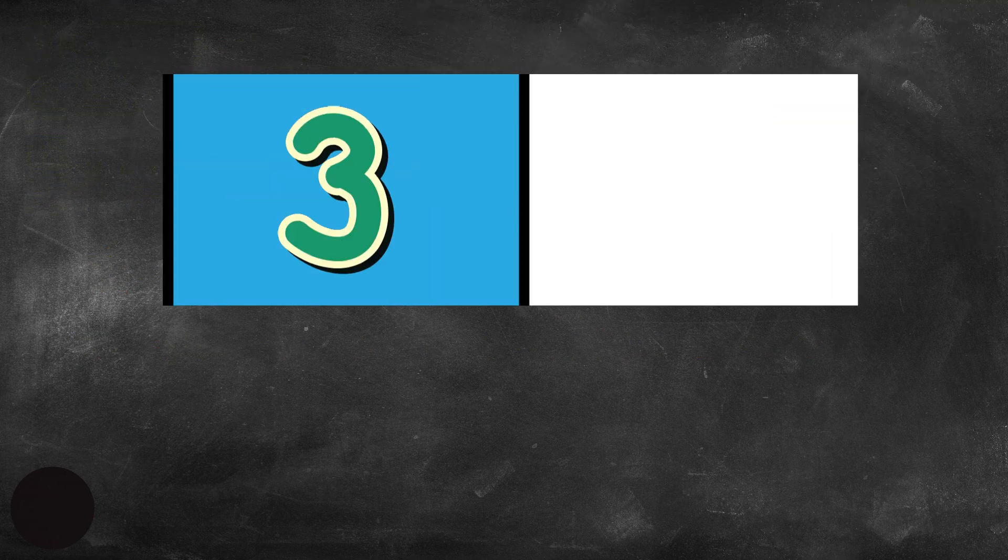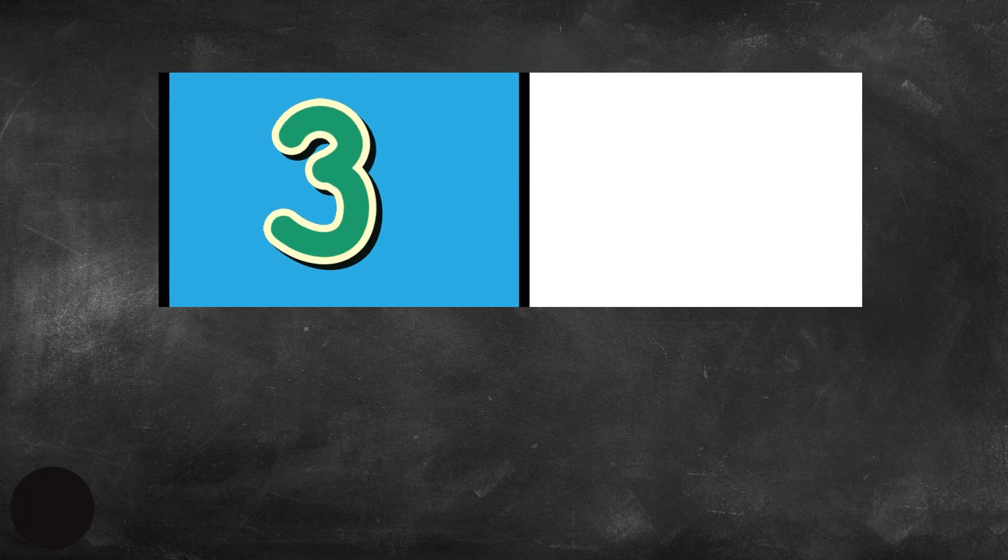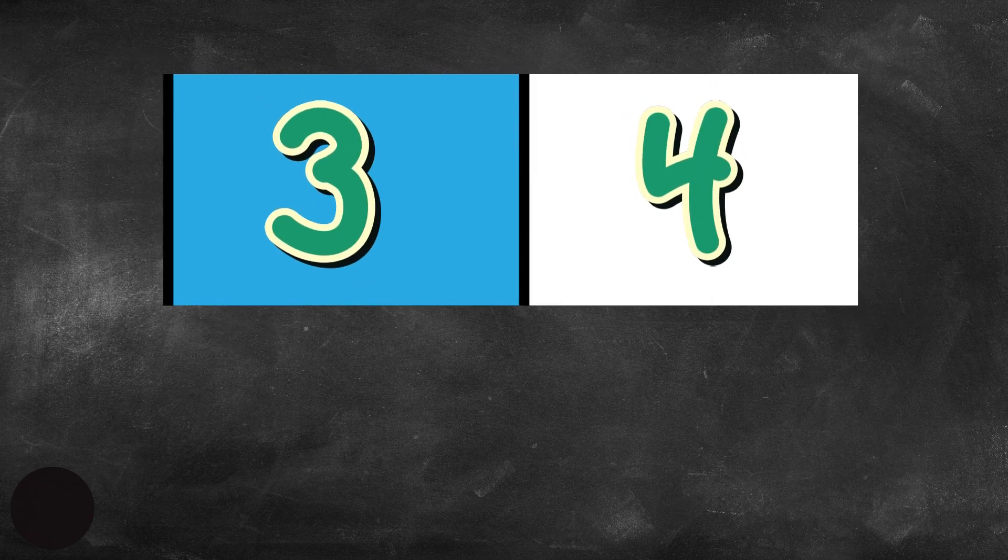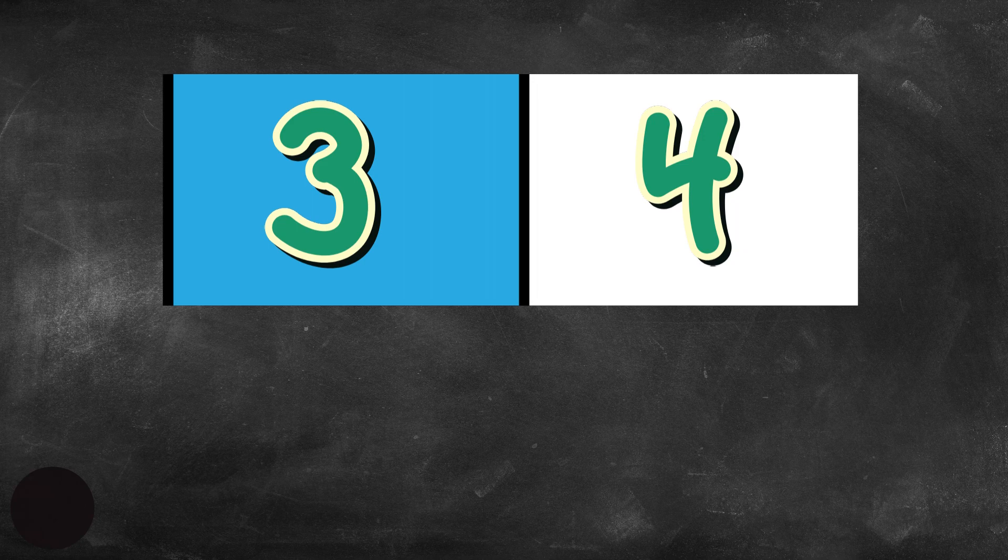We can first put the three in one part of our bar model. Then we can put the four in the other part of the bar model. Now let's add the three and the four together. What's three plus four?